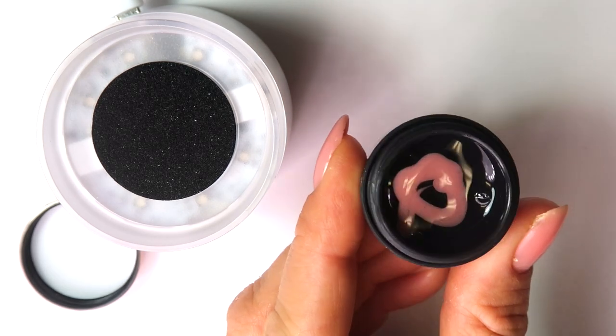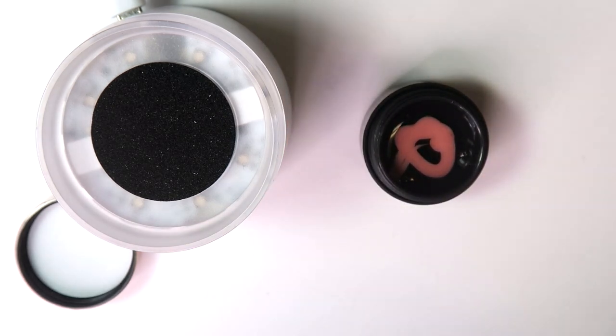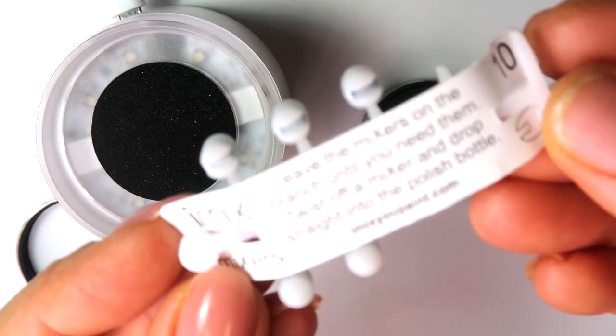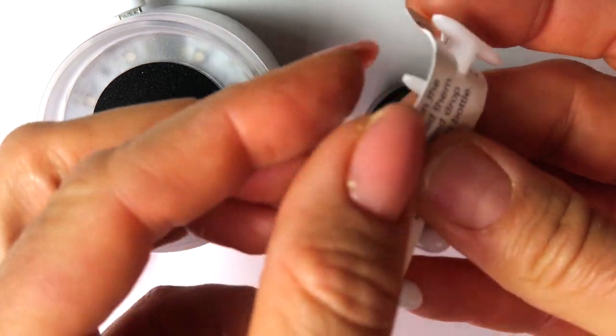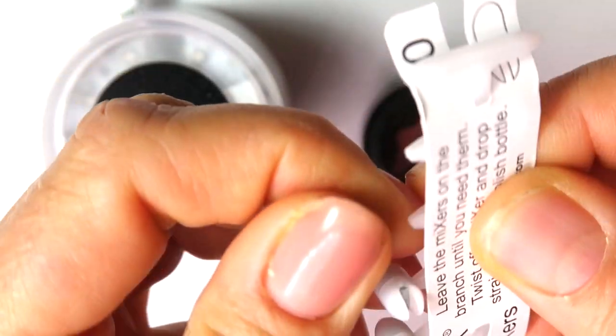So we could mix this by hand and make a color, but we're going to get a lot of bubbles. It's not going to be mixed really well, so I wanted to try this machine. And these are the little mixers that you're going to put inside the gel.